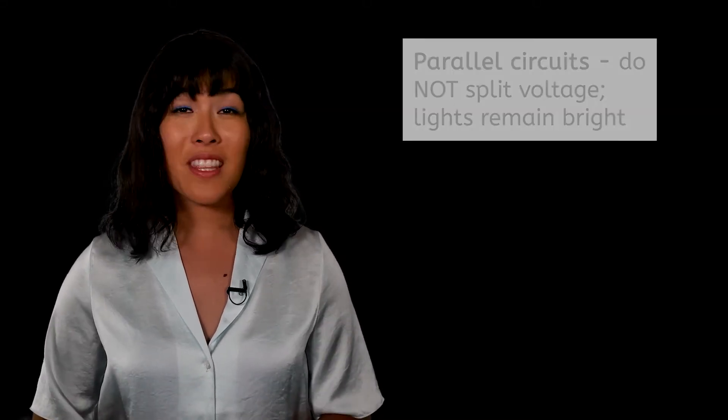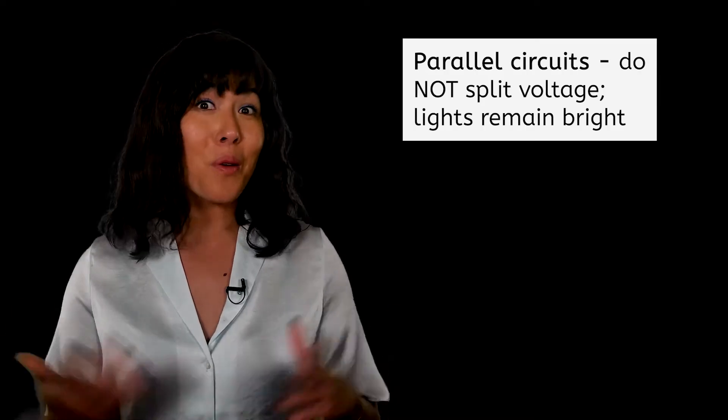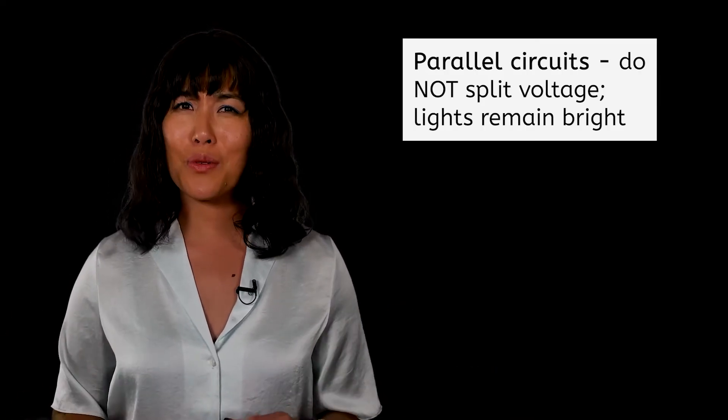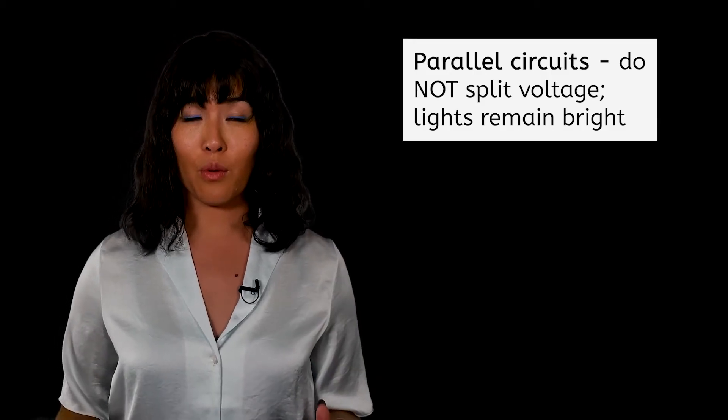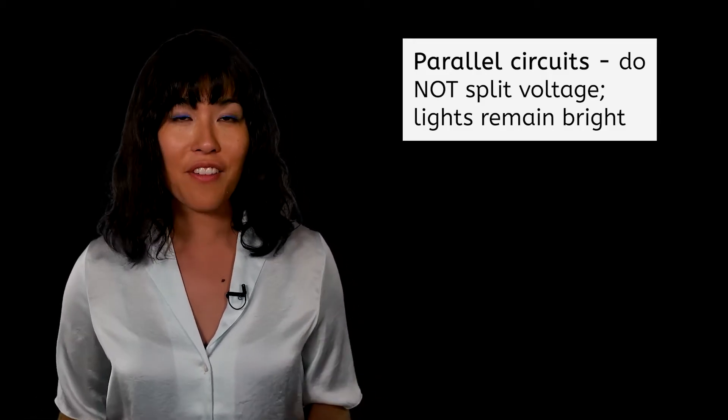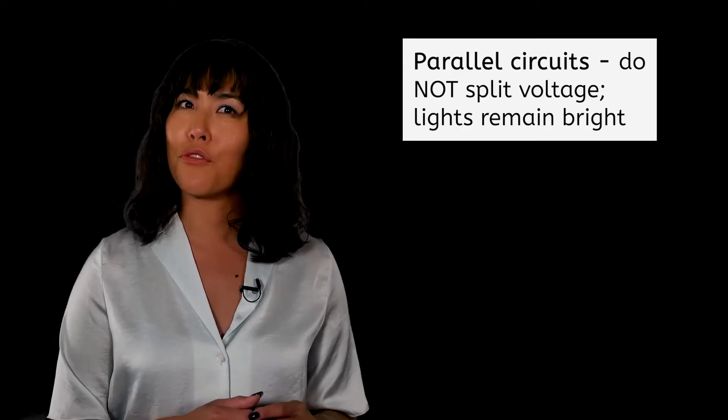Homes are wired in parallel for this reason, so that the lights do not have to split the voltage and they can all be bright. But this seems too good to be true. If each bulb uses the full voltage of the source, that's a lot of energy being used. Where does it come from?